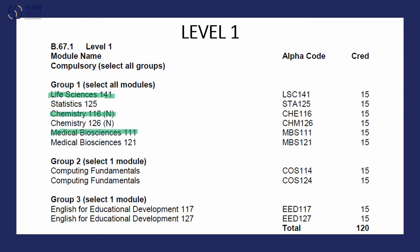Depending on whether the student wants to start with computer fundamentals in the first semester, or they want to start with English, the student will choose to register either Computing Fundamentals 114 or English for Educational Development 117. That will complete their four modules.